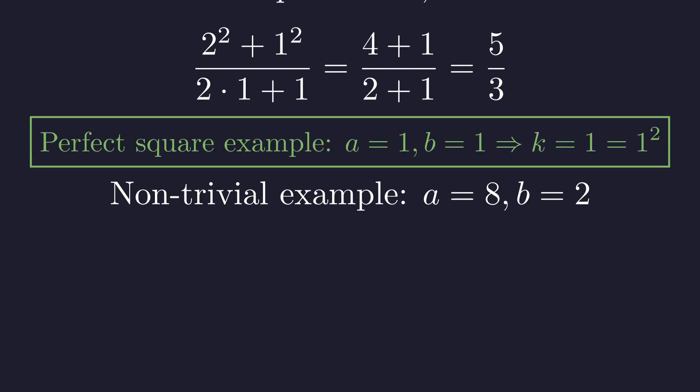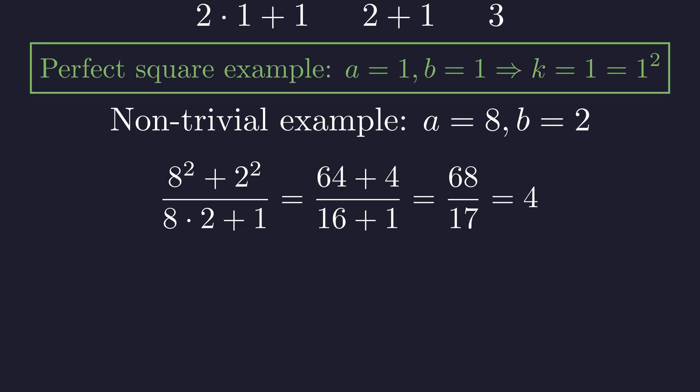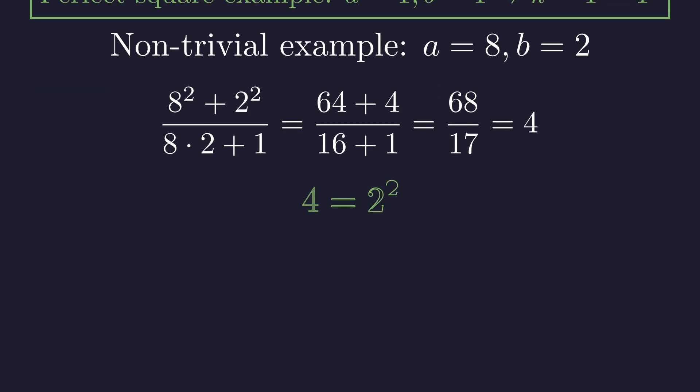Let's see a more surprising example. What about a equals 8 and b equals 2? This gives us 64 plus 4 divided by 16 plus 1, which equals 68 divided by 17, and that equals exactly 4. And 4 is indeed a perfect square, 2 squared.